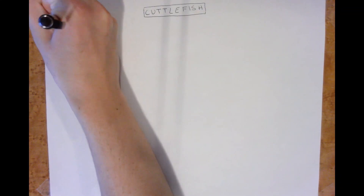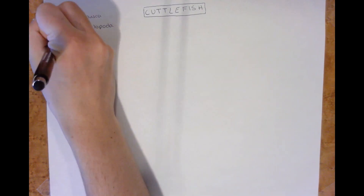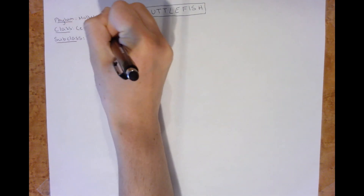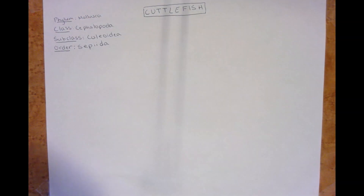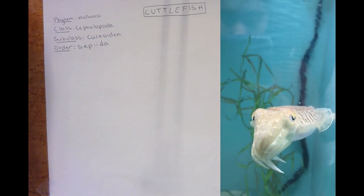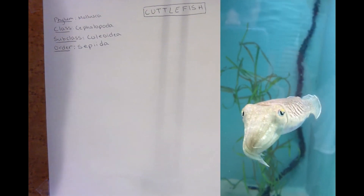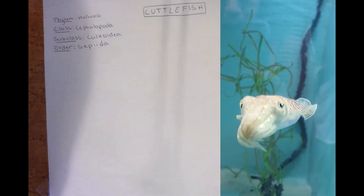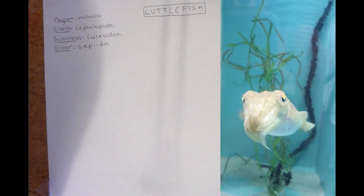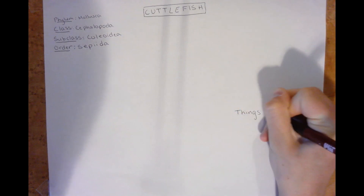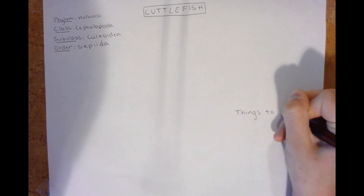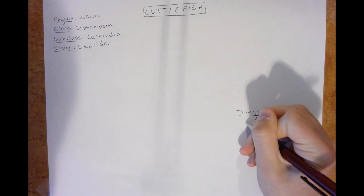Before we draw any organism we need to write out the classification. For this cuttlefish we can classify down to the order Sepiida, which encompasses all cuttlefish. I will be basing my drawing off the European common cuttlefish, Sepia officinalis, but its features will be simplified.